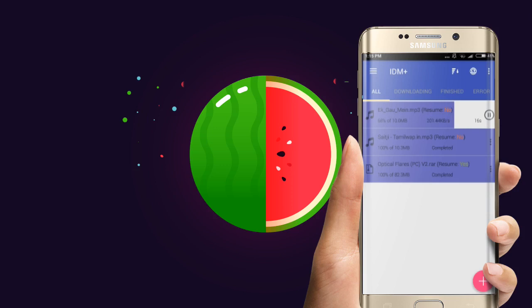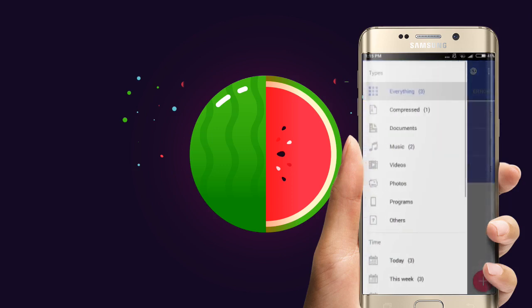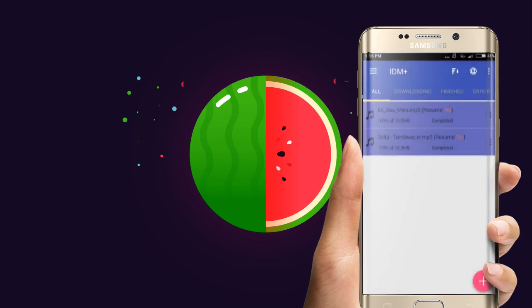If you are interested in the download manager, you can download it with a link. You can download the Pro-APK and the Pro-APK will be free to download. As you have already said, you can click on the Comparasment, Music, and download it.